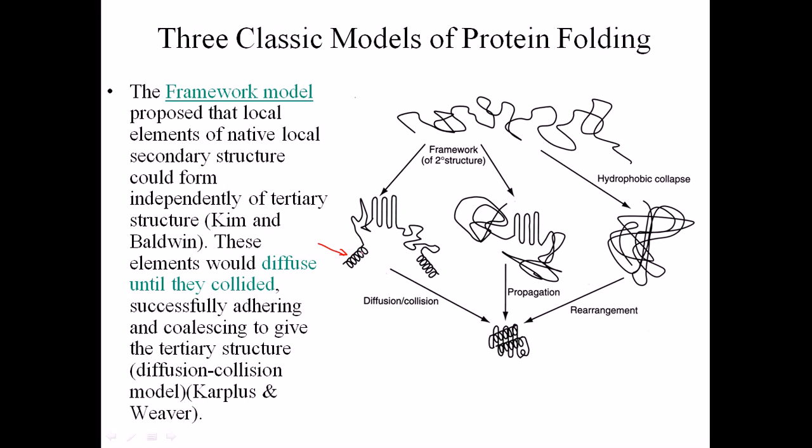Some regions form alpha helix domains while others form beta sheet domains. After forming these different domains, they begin to interact with each other - the alpha helices and beta sheets interact to create the desired, more stabilized protein structure.